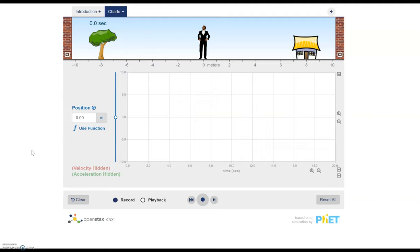So this simulation is called a moving man simulation and you're actually going to be using it in part of the lab in module 2. So it'll be good to just get some experience of what this simulation is and what kind of features it has. And so what we have is the ability to move this man around and we can create a position versus time graph.